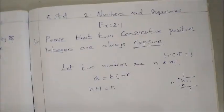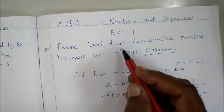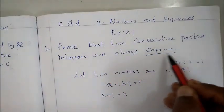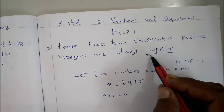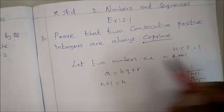This is 10th standard, second unit, numbers and sequences, exercise 2.1, 10th sum. Prove that two consecutive positive integers are always co-prime. So co-prime means already you know that the two numbers' HCF will be 1.